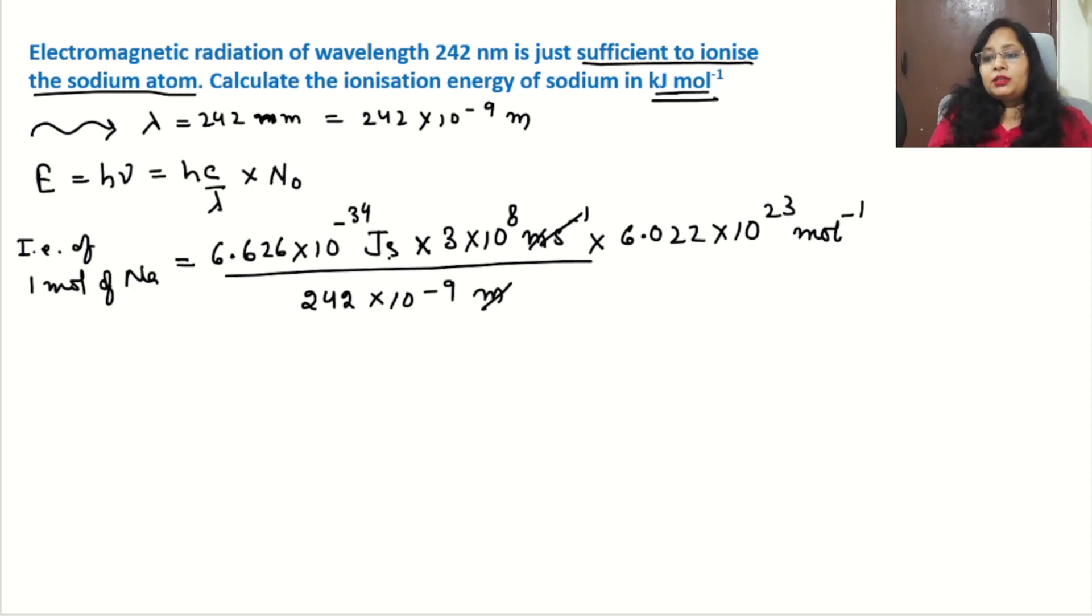Now start the calculation. Meter, meter, second per second is cancelled. Collecting all the numbers together: 6.626 multiplied by 3 multiplied by 6.022 divided by 242, and putting all the powers together: 10 to the power minus 34 plus 23 plus 8 and plus 9. Plus 9 comes from the denominator side, that is minus 9. When it goes up in the numerator, it becomes plus 9.